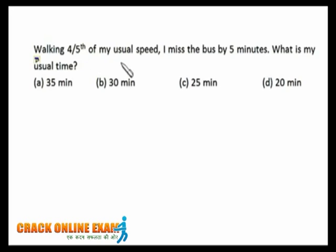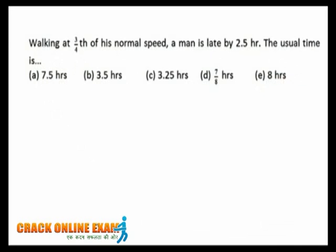Next question: walking at four-fifths of my usual speed, I missed the bus by five minutes. What is my usual time? If my speed is four-fifths of usual, my time is five-fourths of usual — that's one-fourth extra. That one-fourth extra equals five minutes, so one — the usual time — equals 20 minutes.